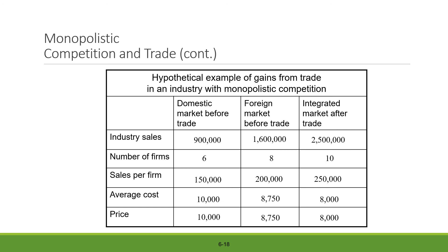Since average cost and price are identical in the equation, both decline together. This concludes our discussion on monopolistic competition and how it impacts trade and consequently results in trade. Thank you very much for watching this lecture. If you have any questions, feel free to ask.